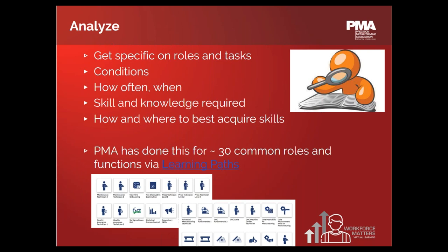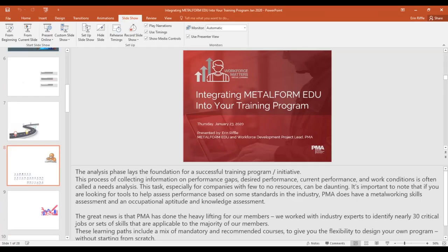The analysis phase lays the foundation for a successful training program — collecting information on performance gaps, desired performance, current performance, and work conditions. For companies with few resources, this can be daunting. If you're looking for tools to help assess performance based on industry standards, PMA has a metalworking skills assessment and an occupational aptitude and knowledge assessment. PMA has worked with industry experts to identify almost 30 critical job skill sets applicable to the majority of members — these are called learning paths.